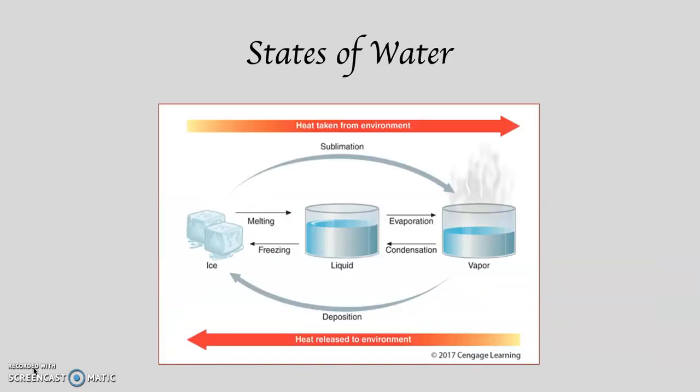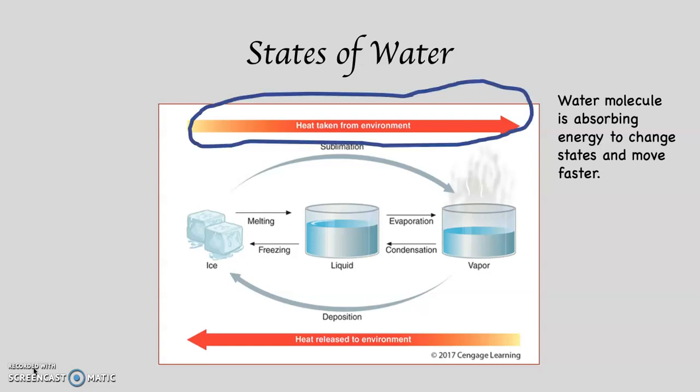Take a look at this diagram — it shows the states of water. What I want you to pay attention to first is this: up at the top, it says 'heat taken from the environment.' Notice that water is going from a solid to a liquid to a gas. What's happening is the water molecule itself is absorbing energy out of the environment — in most cases, out of the atmosphere. In order for water to switch states in that direction, the water molecule has to have more energy, so it absorbs and stores that energy.